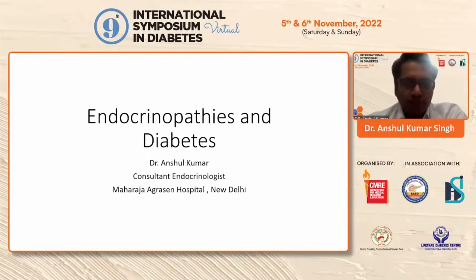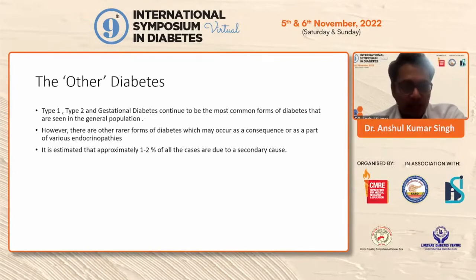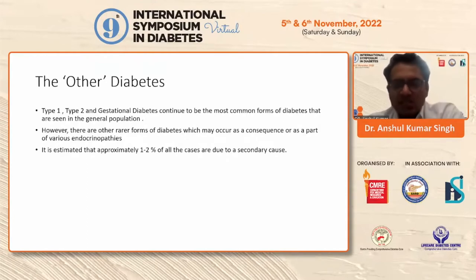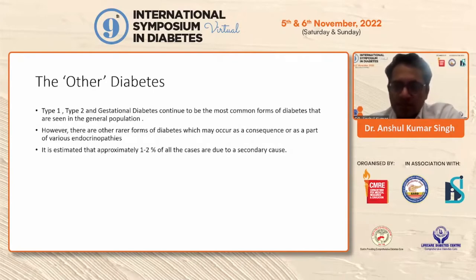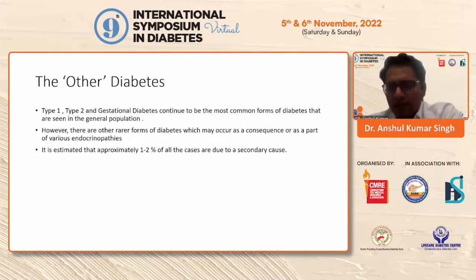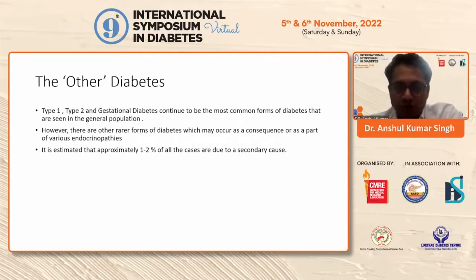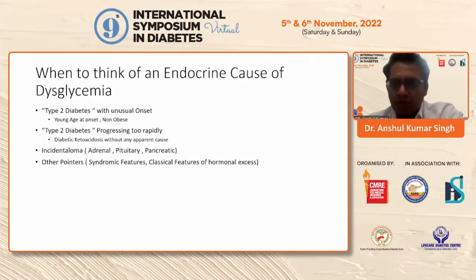The topic for today is endocrinopathies and diabetes — the other diabetes. As we all know, type 1, type 2, and gestational diabetes continue to be the most common forms. However, there are certain rarer forms of diabetes which may occur as a consequence, or in fact as a part of other endocrinopathies. It has been estimated that 1 to 2% of all cases might be due to a secondary cause.